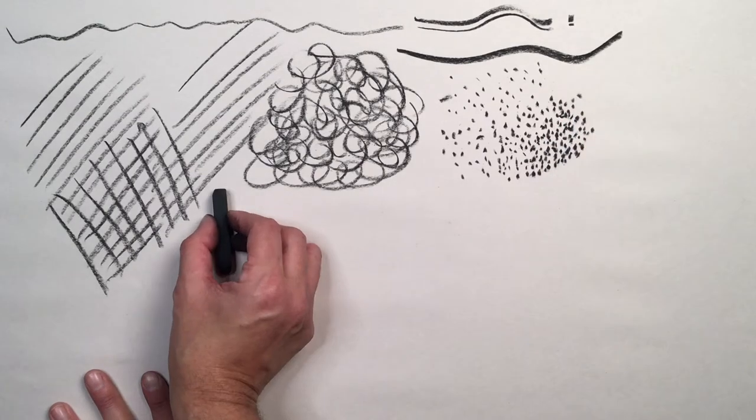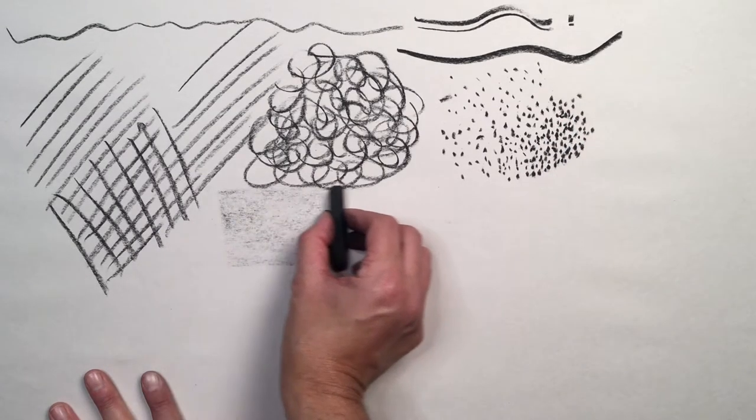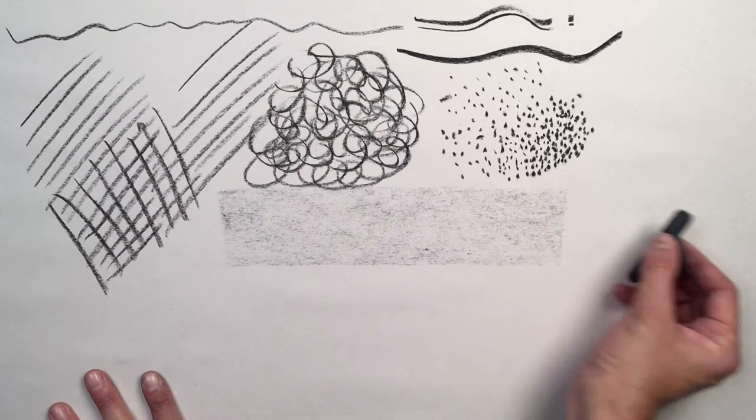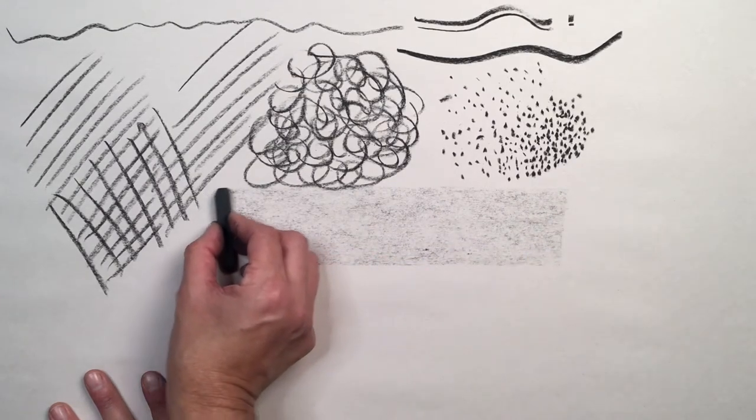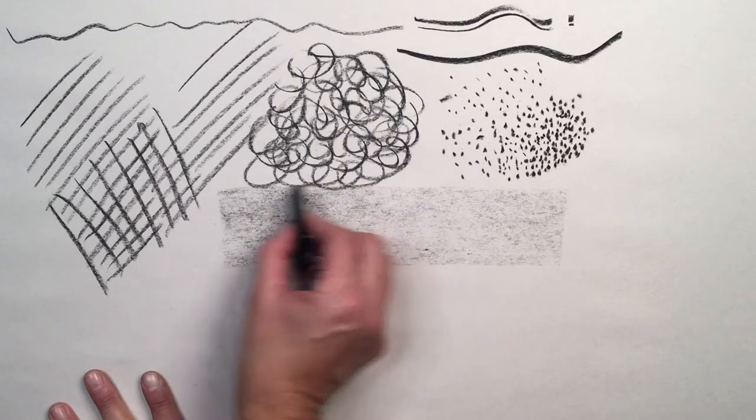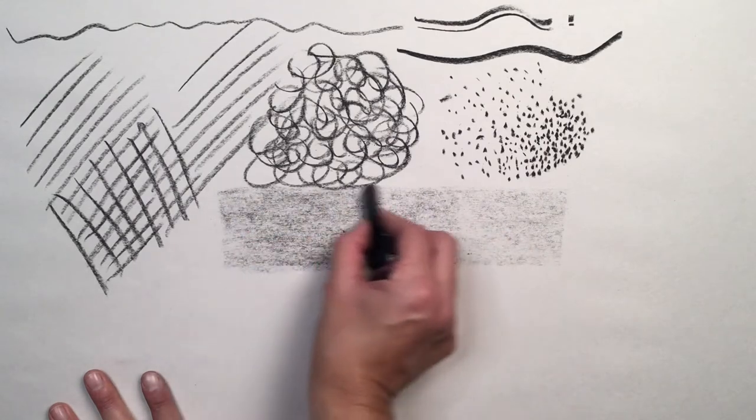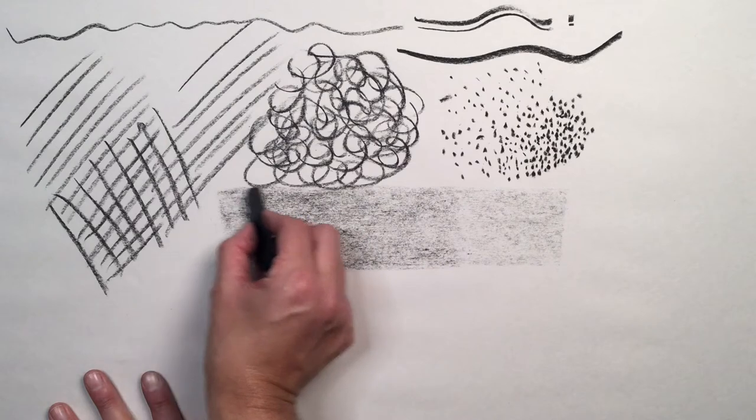Now I'm going to change how I'm holding the pastel so that I can use the flat side of the pastel and do a broad stroke across the page with the full surface of the side of the pastel.